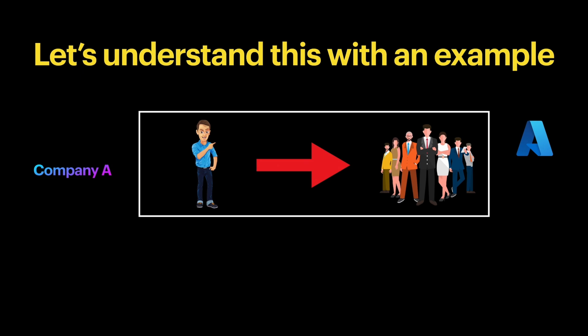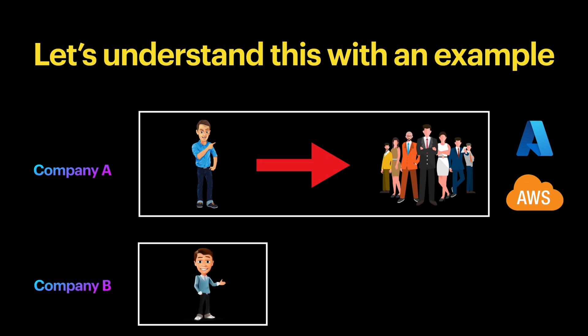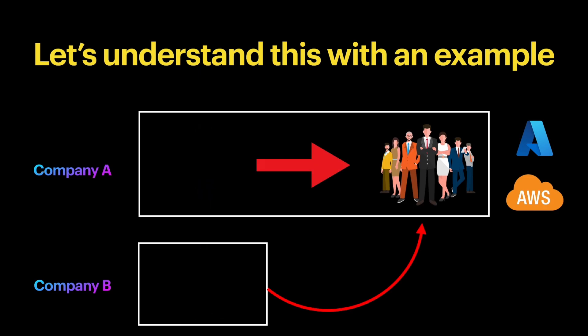In the second scenario, the data engineering team is going to work on a new project built using the AWS cloud platform. The new employee does not have any knowledge about AWS and couldn't assist the team. So the company hires a contractor from another company — say Company B — who has very good knowledge of AWS and joins the team to work on the AWS project. The first scenario maps to managed identity, and the second maps to service principal. Managed identity is completely managed by Azure itself, whereas service principal is a third-party identity used whenever required.